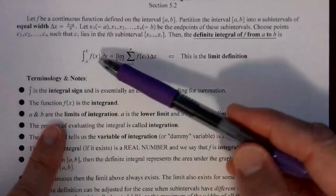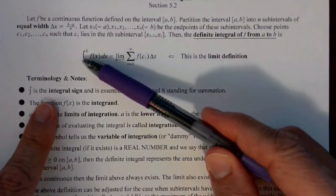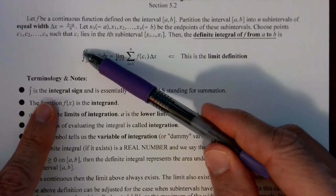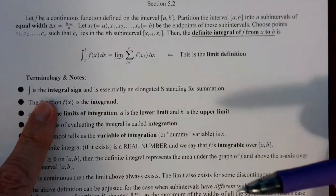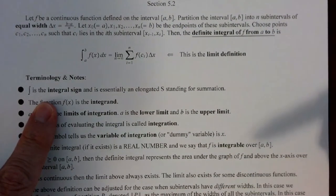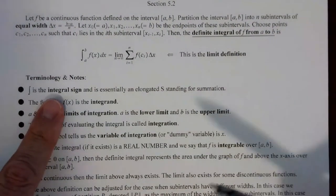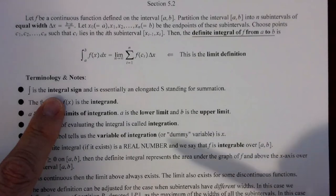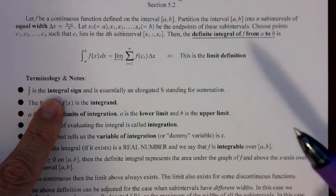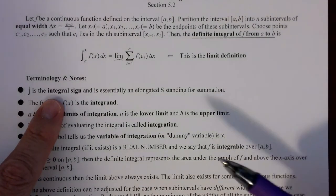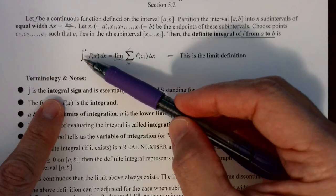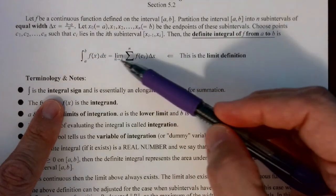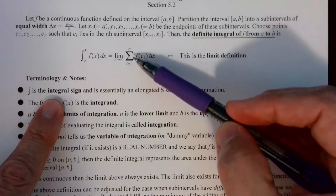This curly symbol is an elongated S called the integral sign, and it stands for summation — that's why a fancy S was used. Ultimately we're talking about a summation process: you first get the sum and add up all the parts, then let the subintervals go to infinity.